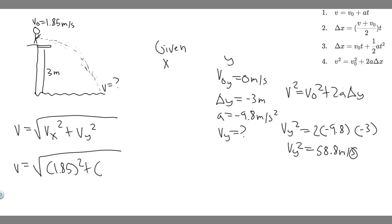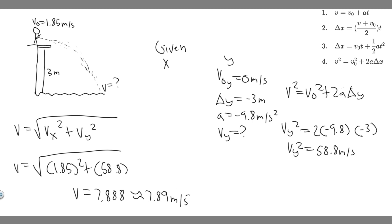Now we plug vy² = 58.8 into our resultant velocity formula: v = √(1.85² + 58.8). Solving this gives v = 7.888..., which we round to 7.89 meters per second. That is the velocity the diver will have just before she enters the water — the resultant of the x and y final velocity components.